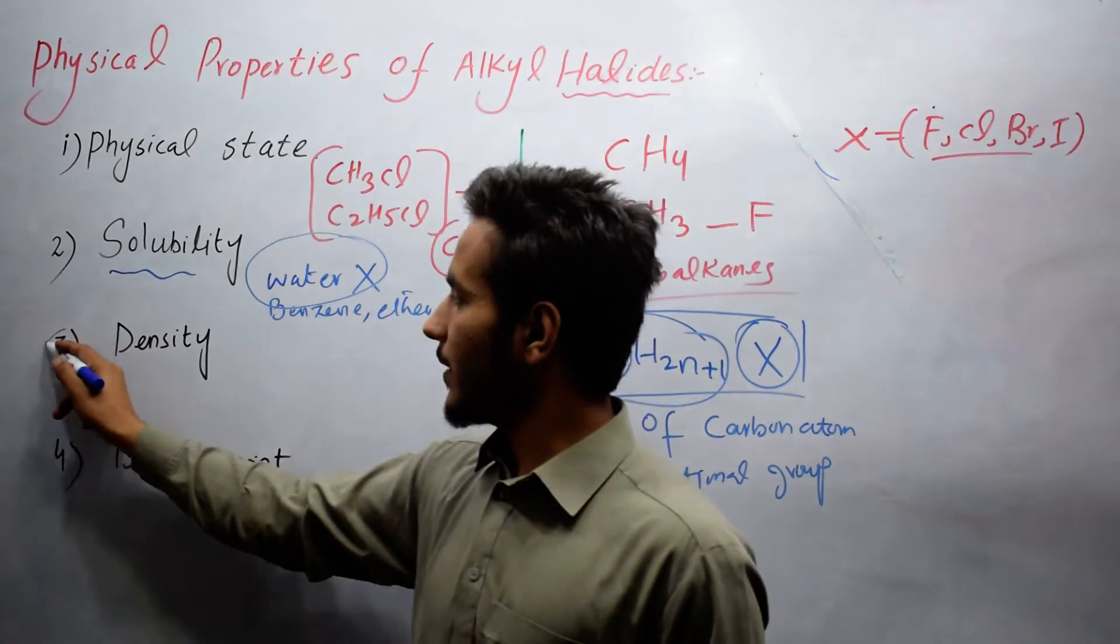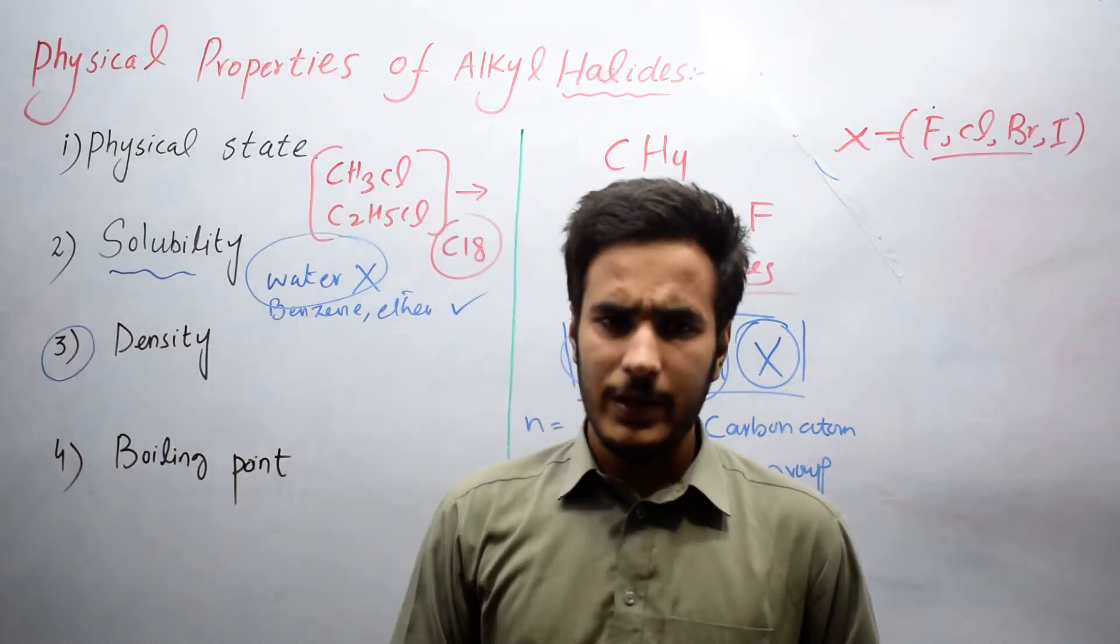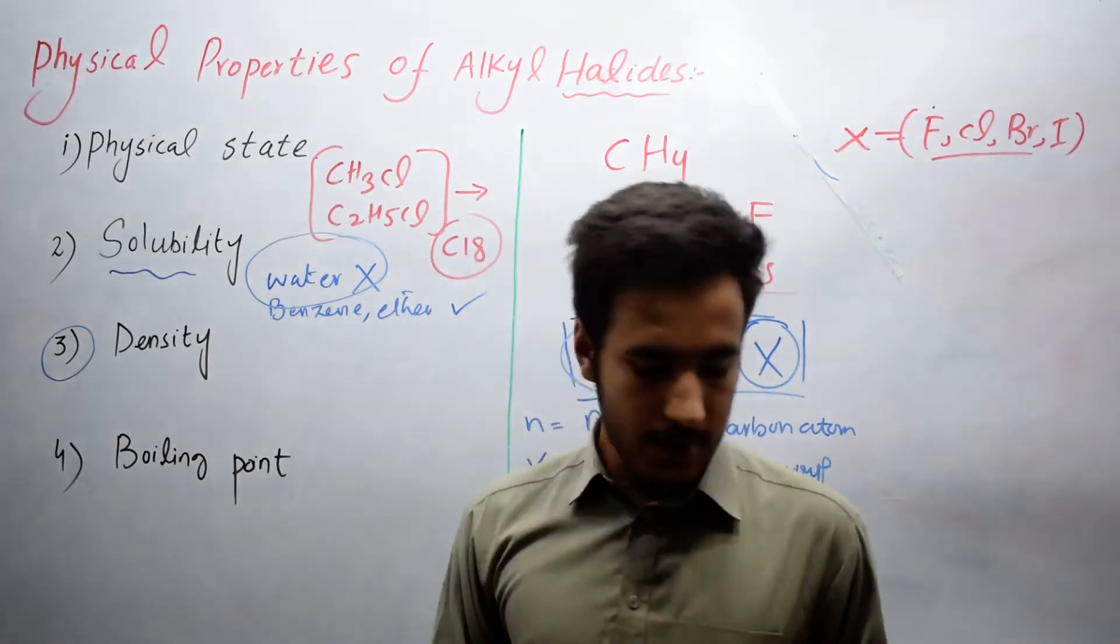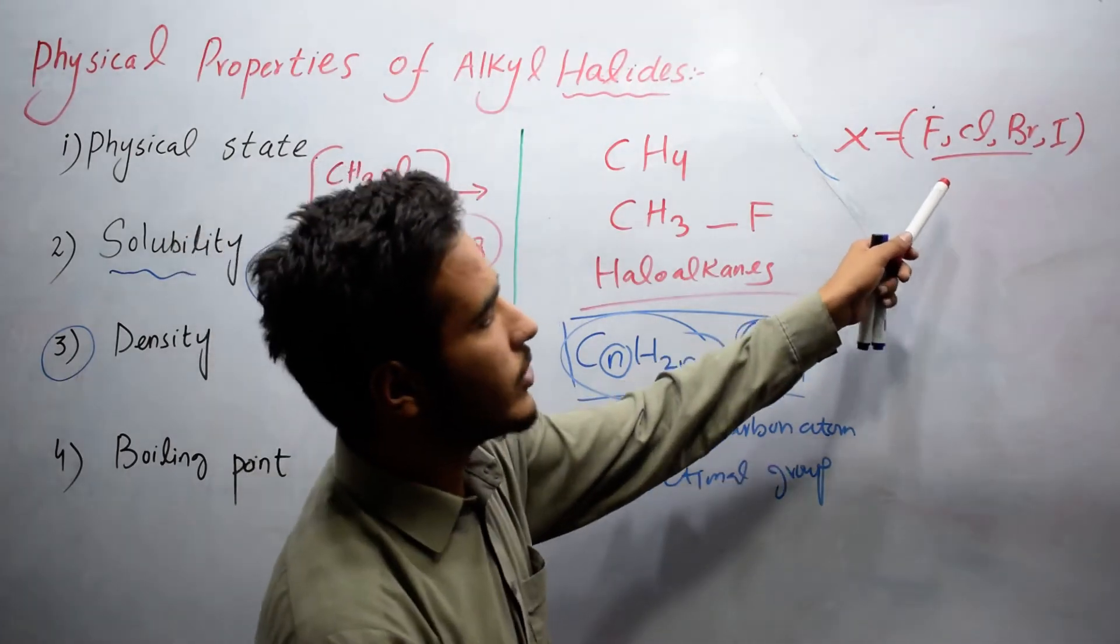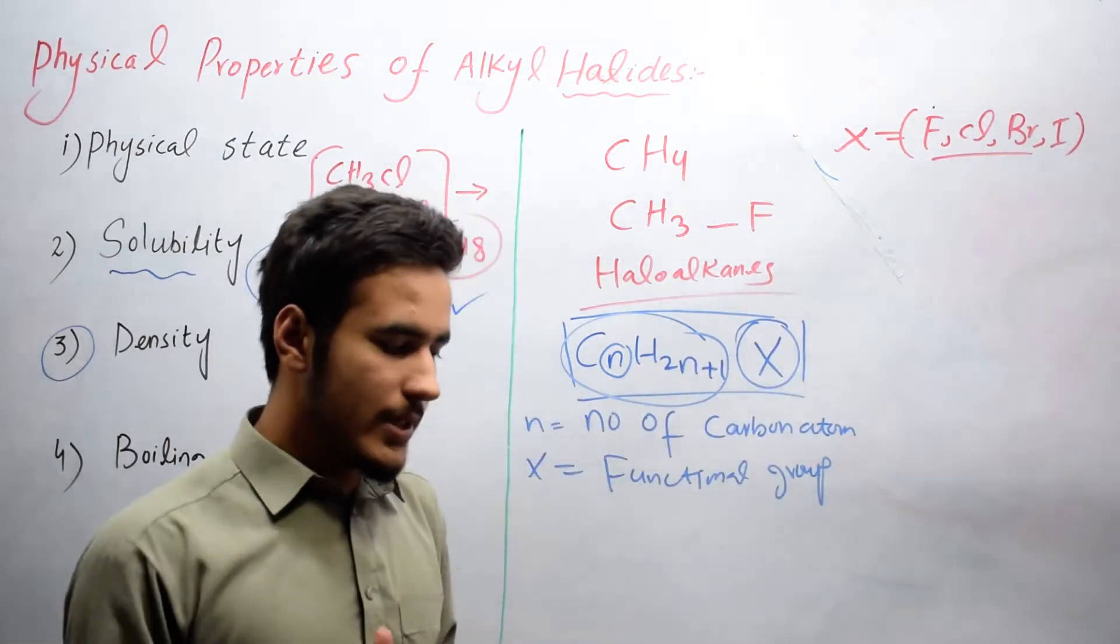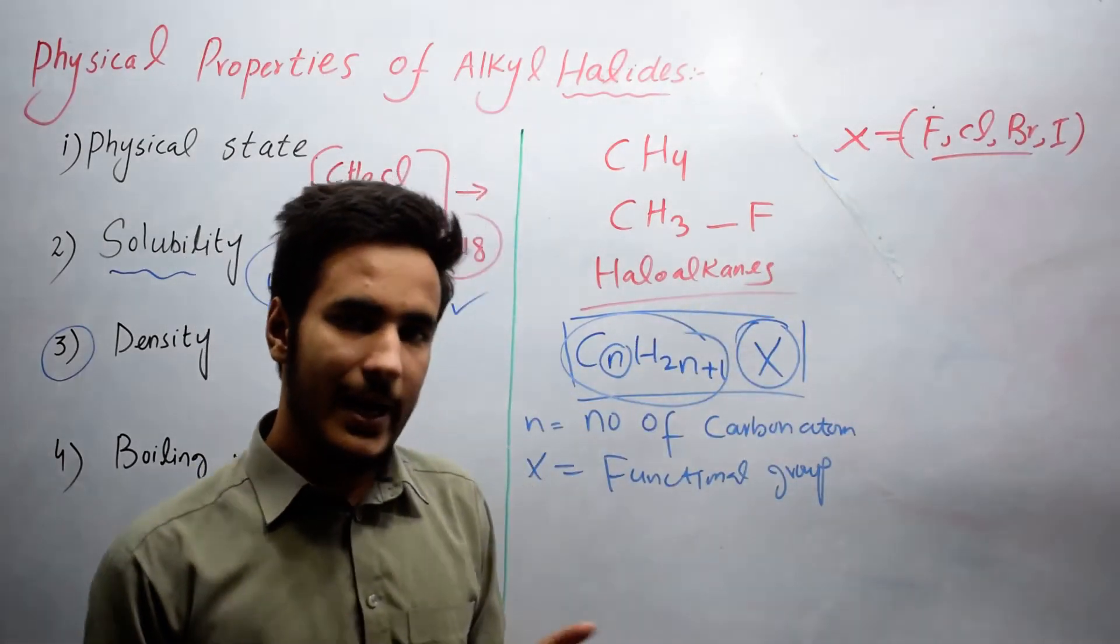The third basic property is density. In density, we have four halogens: fluorine, chlorine, bromine, and iodine. The density of alkyl fluoride and alkyl chloride are lighter than water.